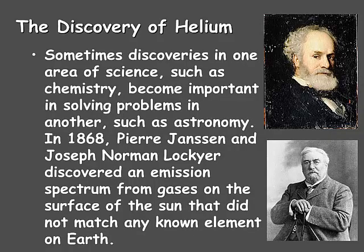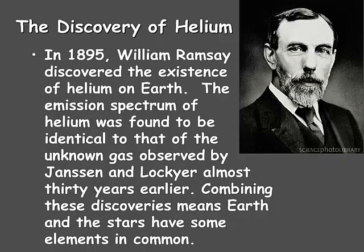Sometimes discoveries in one area of science, such as chemistry, become important in solving problems in another area of science, such as astronomy. Such was the case about 150 years ago. In 1868, Pierre Janssen and Joseph Norman Lockyer discovered an emission spectrum from gases on the surface of the sun that did not match any known elements on Earth at that time. However, in 1895, William Ramsey discovered the existence of helium on Earth, and the emission spectrum of helium was found to be identical to that of the unknown gas observed by Janssen and Lockyer almost 30 years previously.